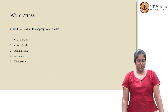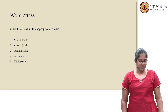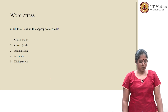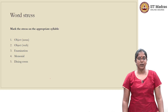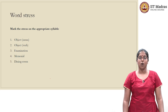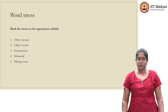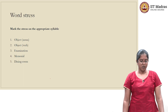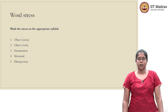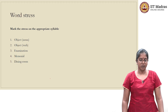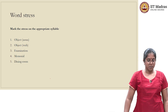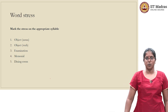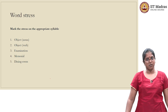The third question is related to word stress. Mark the stress on the appropriate syllable. The first word is object as a noun, the second word is object as a verb, the third word is examination, the fourth word is memorial, and the fifth word is dining room. Pause the video, work on the questions, after which we will discuss the solutions.